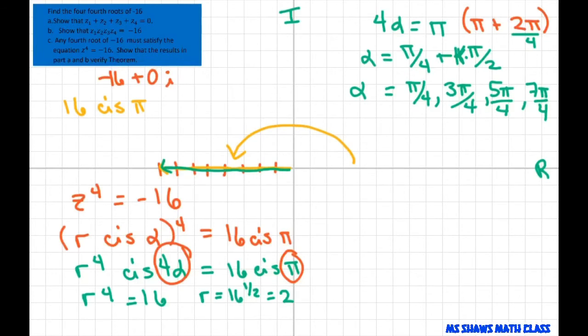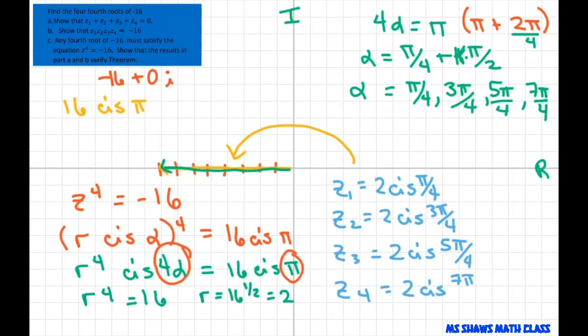So the 4th roots of negative 16 are going to be z1 equals 2 cis of π divided by 4, z2 equals 2 cis of 3π divided by 4, z3 equals 2 cis of 5π divided by 4, z4 equals 2 cis of 7π divided by 4.